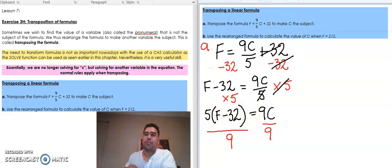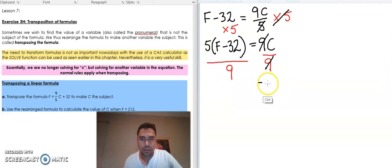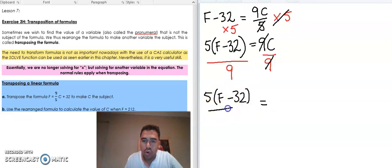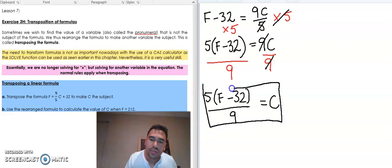As a result of the right hand side being divided by nine, they get cancelled out and technically turn into ones because nine divided by nine is one. And what I'm left with now, I can write this in many ways, but to keep it consistent, let's put the five in the front, F take 32, all over nine is equal to C.